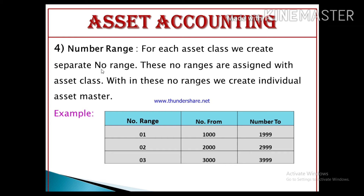The next term is number range. For each asset class, we create a separate number range, which is assigned to that asset class. Within these number ranges, we create individual asset masters — similar to how we create number ranges in vendor masters. For example, range 01 covers 1000–21999, and range 02 covers 2000–22999.